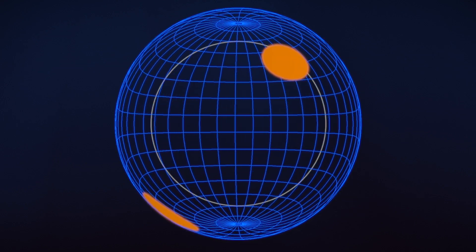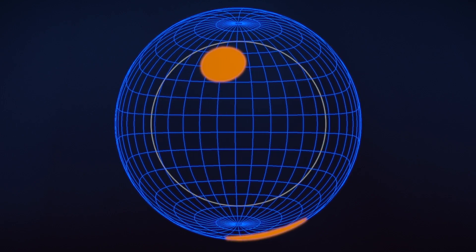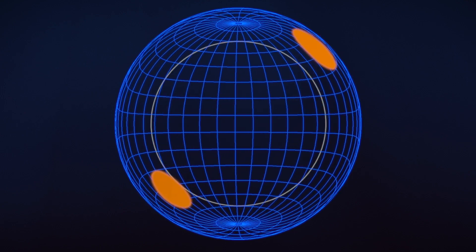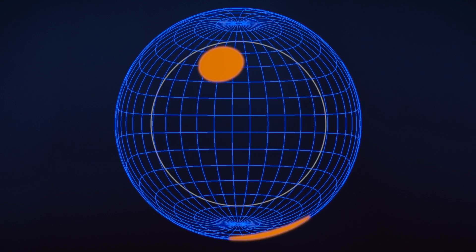Textbooks show pulsars with two hot spots on the surface, directly opposite each other at the magnetic poles. As the pulsar spins, the spots come in and out of view, creating regular changes in its X-ray brightness.